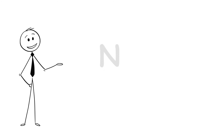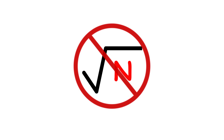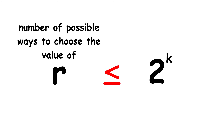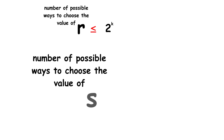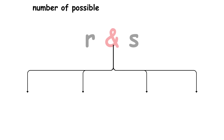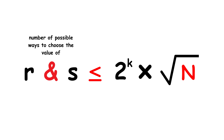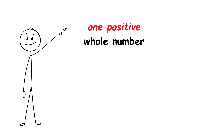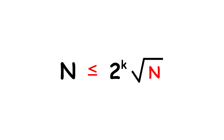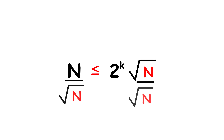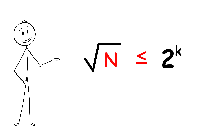In fact, you can choose a value of N that isn't a square number, even though that means that square root N won't be a whole number. To recap, we now know that the number of possible ways to choose the value of R must be less than or equal to 2 to the power of K, and the number of possible ways to choose the value of S must be less than or equal to square root N. So, what do we know about the number of possible ways to choose both R and S? First, it must be less than or equal to 2 to the power of K times square root N. Secondly, each way corresponds to exactly one positive whole number which is less than or equal to N. So the total number of possible ways must be exactly equal to N. Therefore, N is less than or equal to 2 to the power of K times square root N.